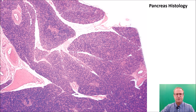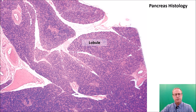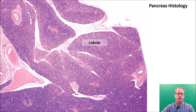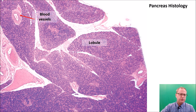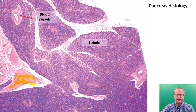Let's move on to our last organ — the pancreas. The pancreas is part endocrine and part exocrine. It is divided into lobules — in macroanatomy it looks like chewed-up chewing gum because of this lobular structure. You can see blood vessels in there, some very small and some very large.